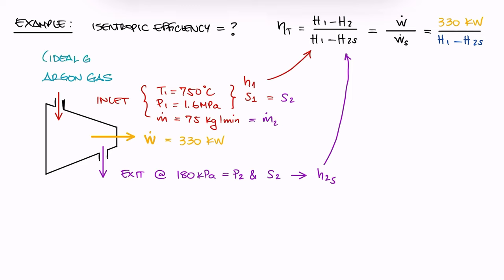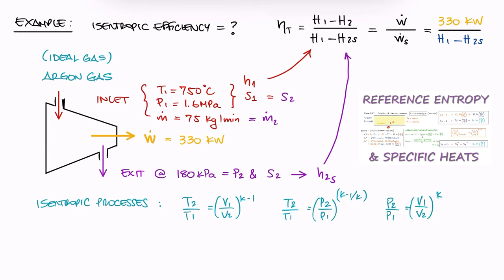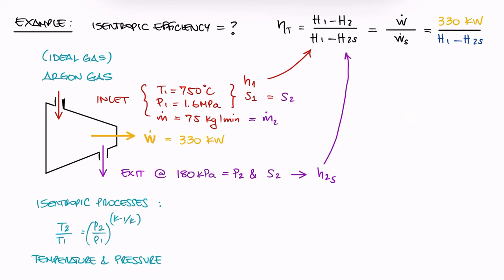However, argon is an ideal gas and we just derived some isentropic relations for ideal gases in the previous lecture. In this case, we will use the relation between temperature and pressure since those are the properties we were given. And since we're calculating properties for the isentropic case, we'll add a subscript S to state two properties.